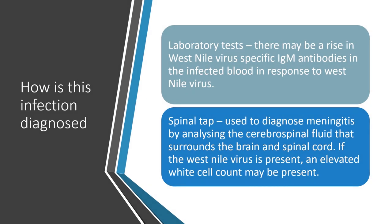How is this infection diagnosed? Laboratory tests may show a rise in West Nile Virus specific IgM antibodies in the infected blood in response to the virus. A spinal tap is used to diagnose meningitis by analysing the cerebrospinal fluid that surrounds the brain and spinal cord. If West Nile Virus is present, an elevated white cell count may be present.